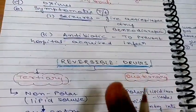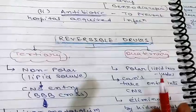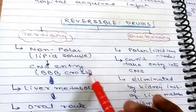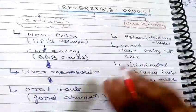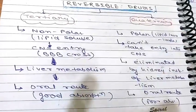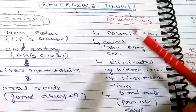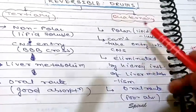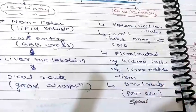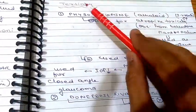Now looking at reversible drugs — again divided into two parts: tertiary and quaternary structure. Tertiary structure drugs are non-polar, so they are lipid soluble — they can cross the blood-brain barrier, enter the liver and undergo hepatic metabolism, and can be given through the oral route because they are lipid soluble and easily absorbed. Quaternary structure drugs are polar and lipid insoluble — they cannot enter the CNS easily, their elimination depends on the kidney, and they are not usually given orally due to poor oral absorption.